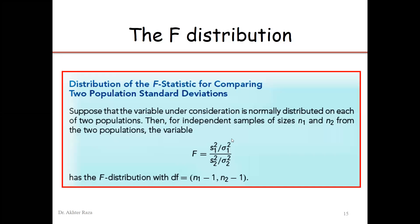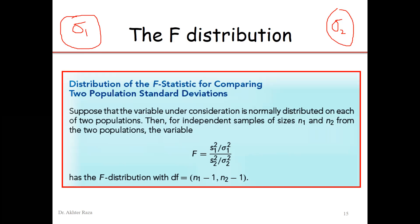F distribution. If we have two populations and we want to compare the standard deviations of these two populations, this can be done by using the F distribution. We have population 1 and population 2, where sigma 1 is the standard deviation of population 1 and sigma 2 is the standard deviation of population 2. Our question is whether these two standard deviations are the same or not.